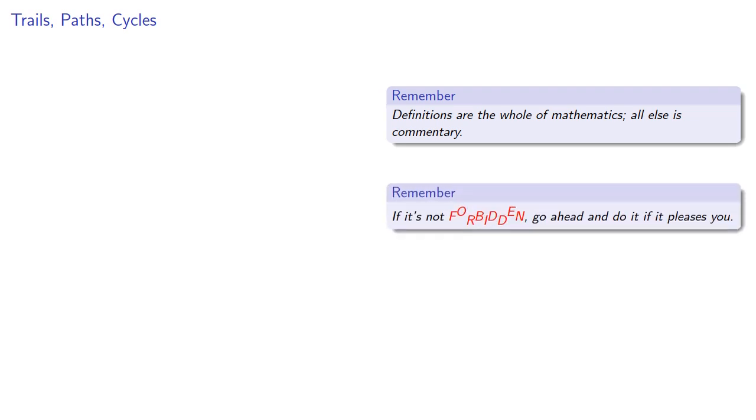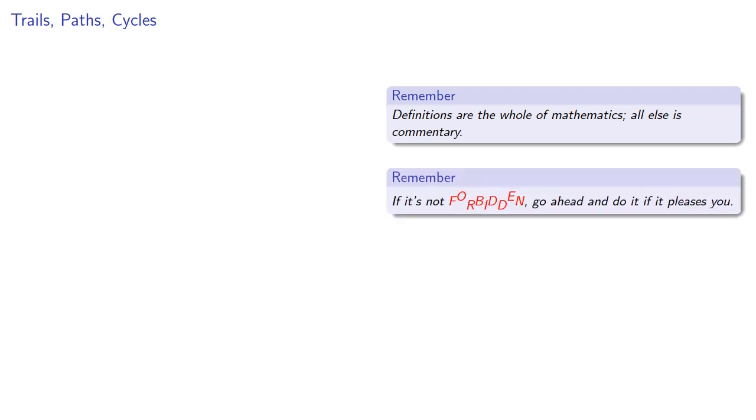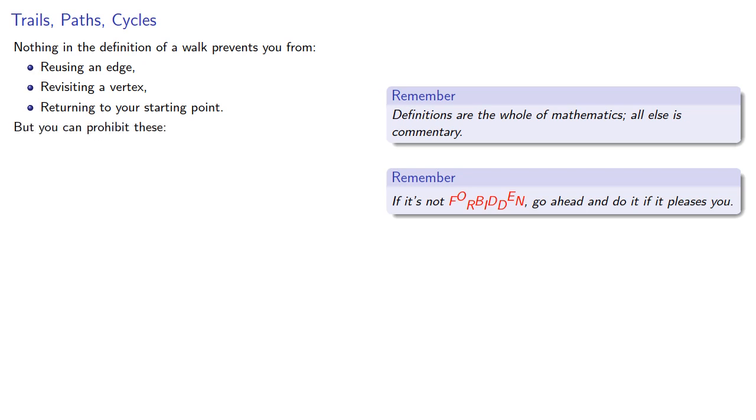Remember, definitions are the whole of mathematics, all else is commentary. If it's not forbidden, go ahead and do it if it pleases you. Nothing in the definition of a walk prevents you from reusing an edge, revisiting a vertex, or returning to your starting point. But you can prohibit these: a trail has no reused edges, a path has no revisited vertices, and a cycle begins where it ends without revisiting intermediate vertices.